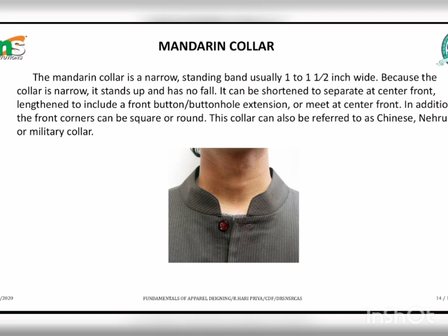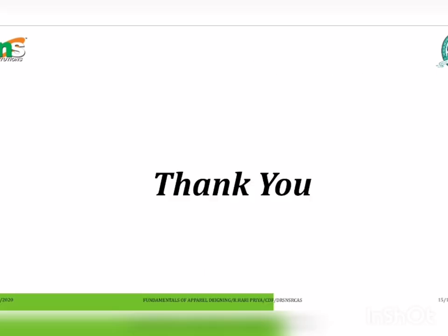Next, the mandarin collar. The mandarin collar is a narrow standing band, usually one to one and a half inches in width. Because the collar is narrow, it stands up and has no fall. It can be shortened to separate at the center front, lengthened to include a front buttonhole extension, or meet at center front. The front corners can be square or round. This collar is also referred to as a Chinese, Nehru, or military collar.